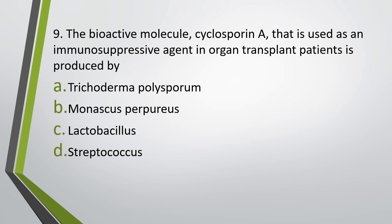Question number nine: The bioactive molecule cyclosporin A, used as an immunosuppressive agent in organ transplant patients, is produced by — (a) Trichoderma polysporum, (b) Monascus purpureus, (c) Lactobacillus, (d) Streptococcus. Correct answer is option A: Trichoderma polysporum.